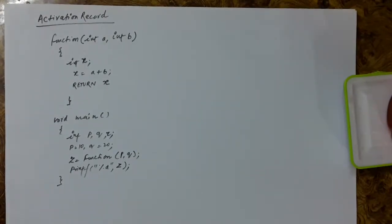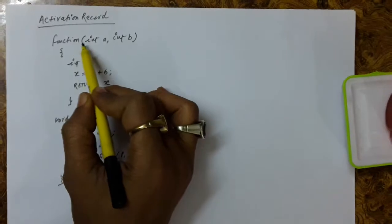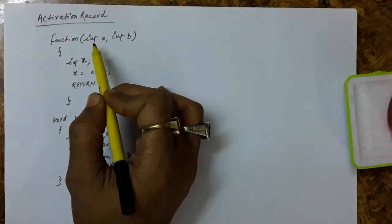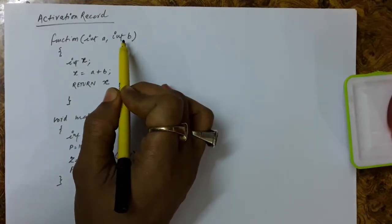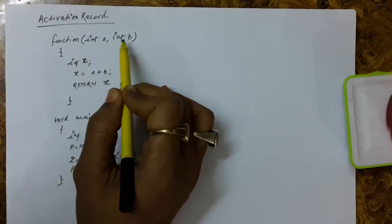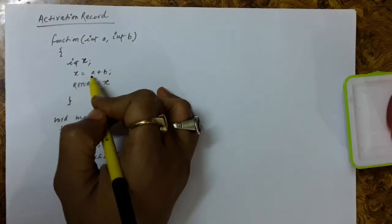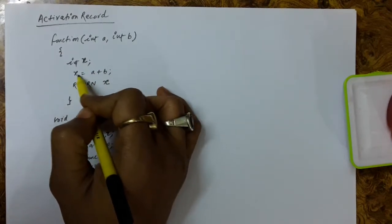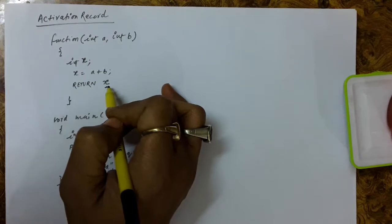In this lecture, we will discuss the concept of the activation record. Suppose we have a function named as function. The function is a user-defined function. These two parameters are passed as a and b, and you are performing the addition of these two numbers. You have taken a local variable x and applied a formula x equals to a plus b, and this value x is returned.